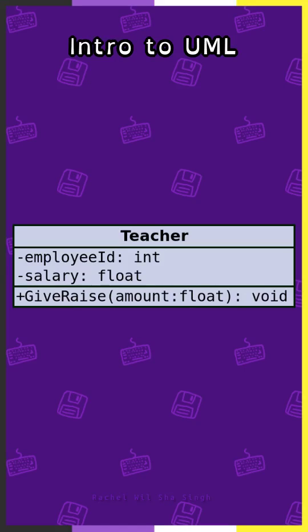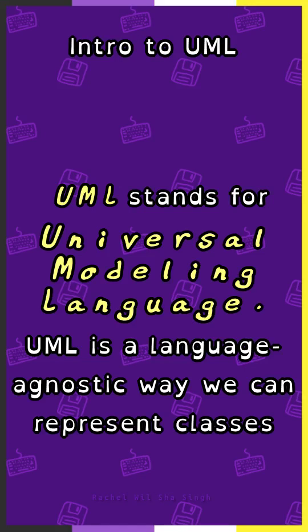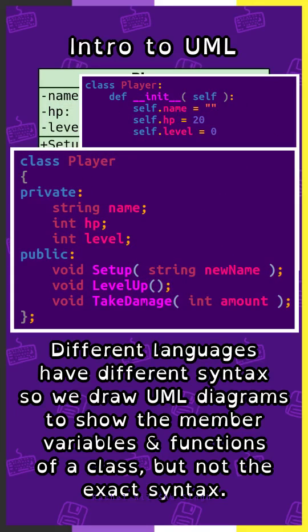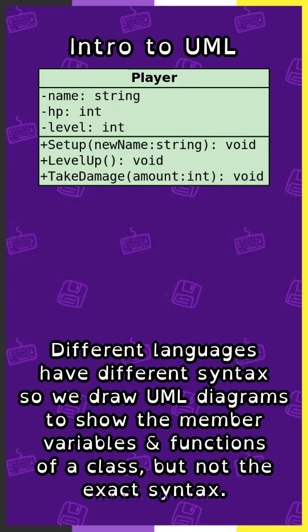Intro to UML. UML stands for Unified Modeling Language. UML is a language-agnostic way we can represent classes. Different languages have different syntax, so we draw UML diagrams to show the member variables and functions of a class, but not the exact syntax.